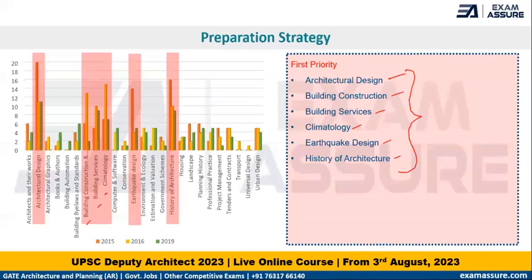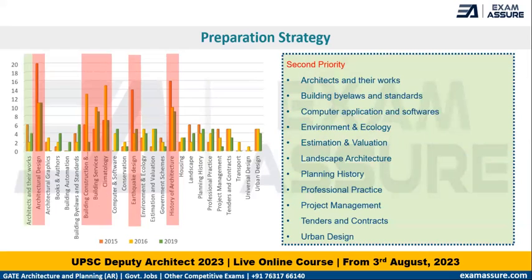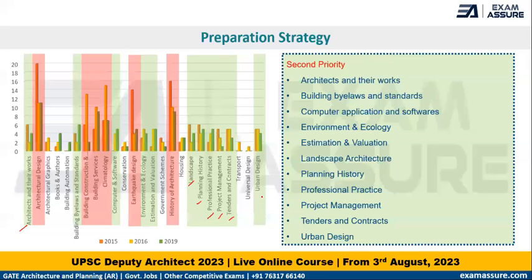In the second set, after the first priority, we can have subjects related to Architects and their Work, Building Bylaws, Computer Application and Software, Environment, Ecology, Estimation and Valuation, Landscape, Planning, Professional Practice, Project Management, Tenders and Contracts, and Urban Design as second priority subjects.